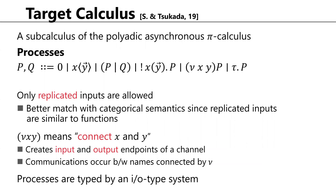Our target calculus is a subcalculus of the polyadic asynchronous pi calculus given by a grammar including: nil process, output action, parallel composition, replicated input, name creation, and internal action. This calculus was introduced in our previous work. Notably, we only allow replicated inputs — non-replicated inputs are not allowed — because replicated inputs have a better match with categorical semantics, being similar to functions.